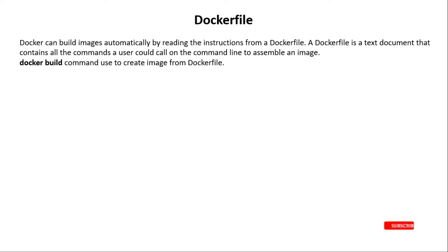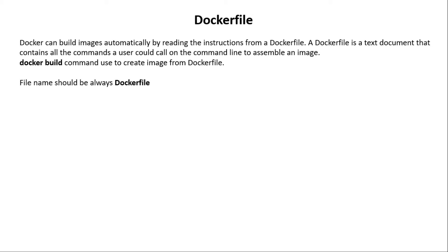The docker build command is used to create an image from a Dockerfile. When you create a Dockerfile, make sure the file name should be 'Dockerfile' and the 'D' should be capitalized. When you create any Dockerfile on any system or any machine, the filename must be 'Dockerfile' with a capital D, as mentioned on your screen.